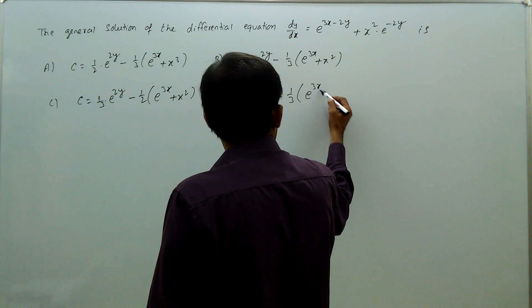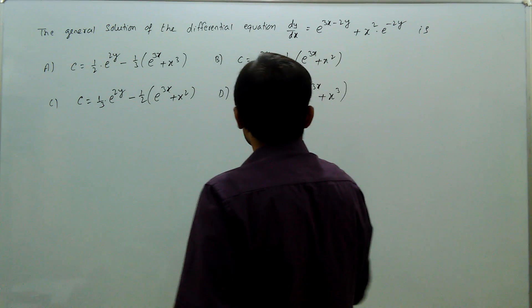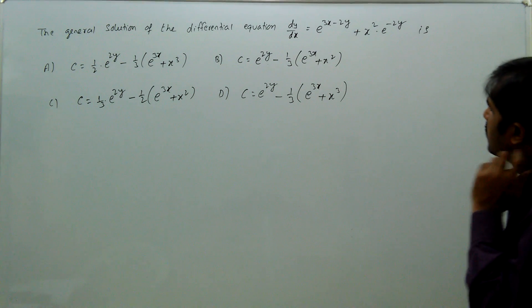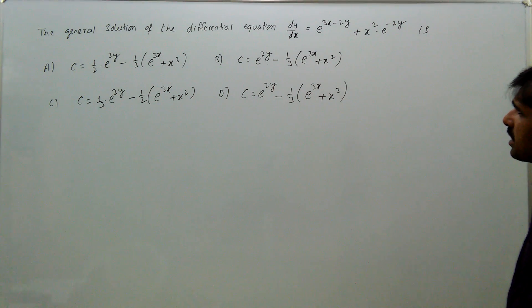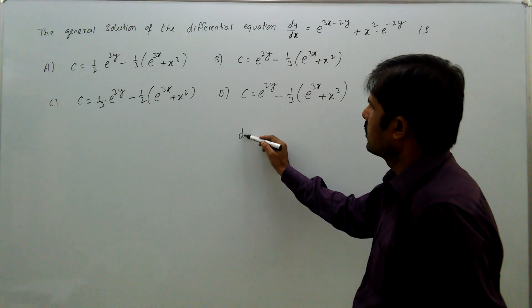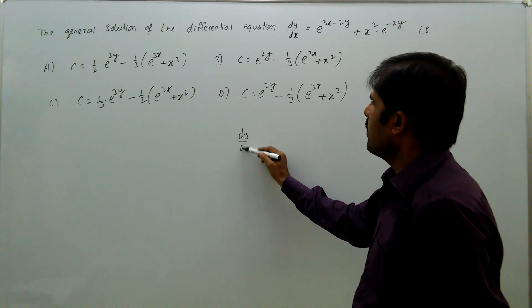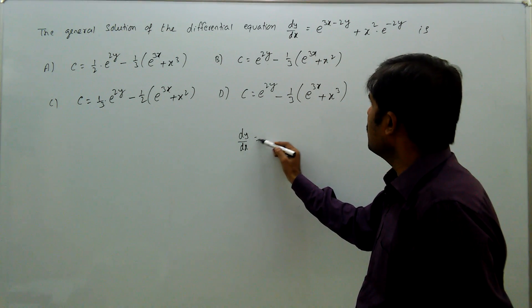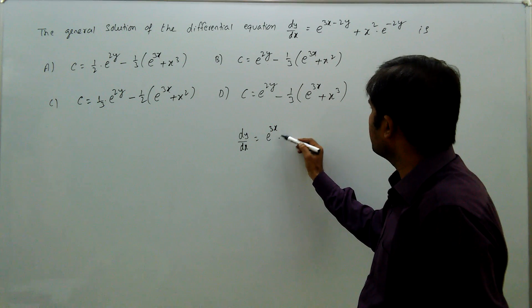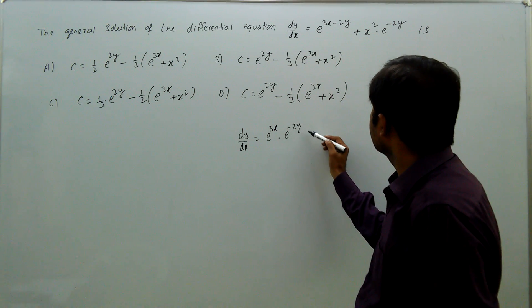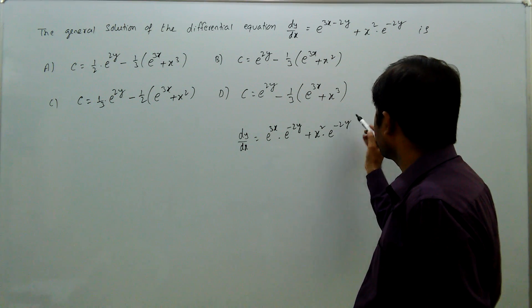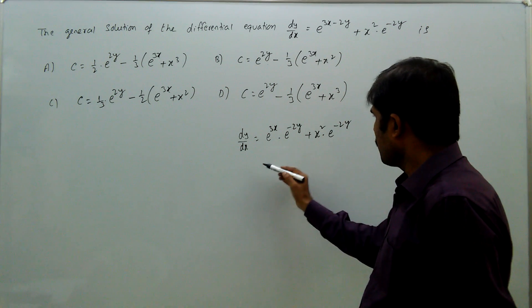This can be solved by the variable separable method. Rewrite: dy/dx = e^(3x)·e^(-2y) + x²·e^(-2y).